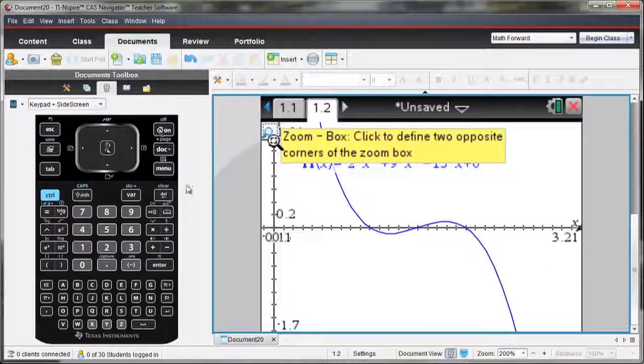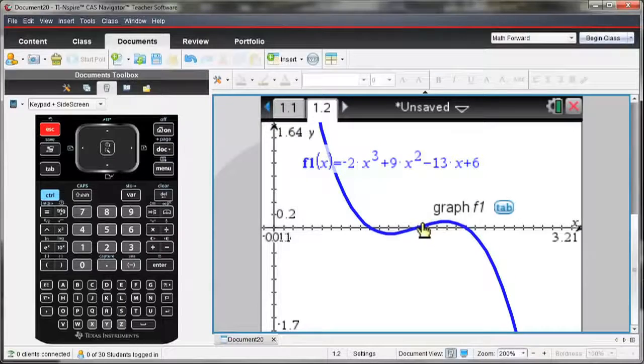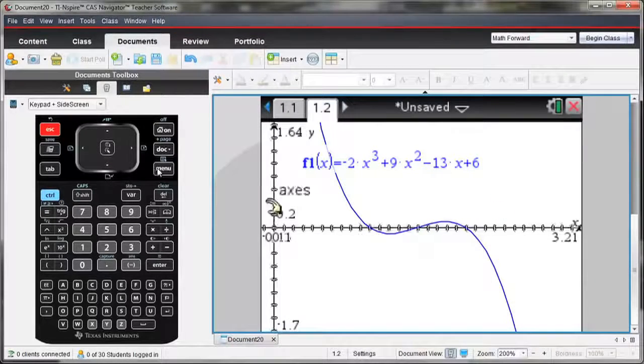With Zoom Box, I can just look at a certain region of the graph. Now I notice in here that I have three zeros, a minimum, and a maximum. So let's find what that minimum value is.